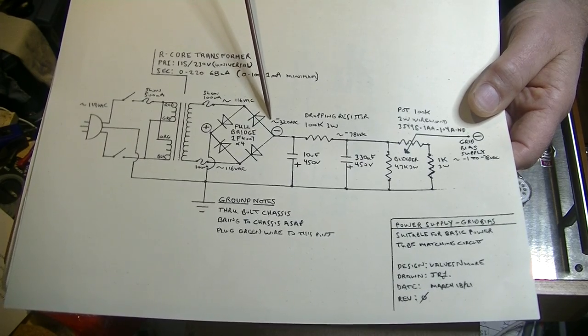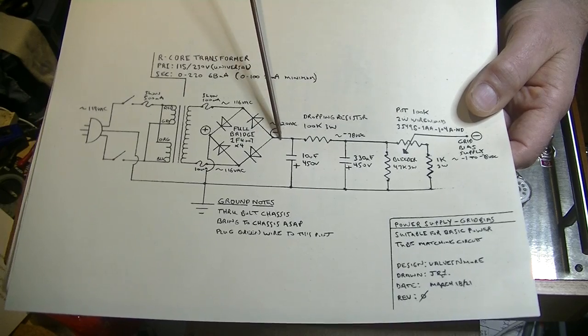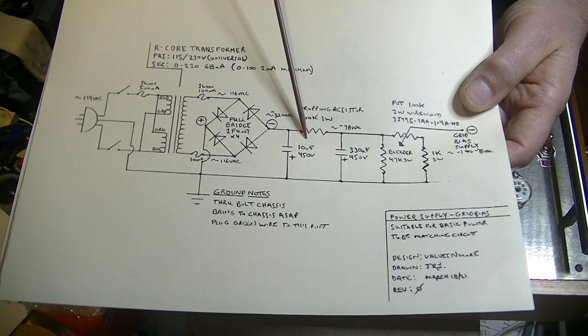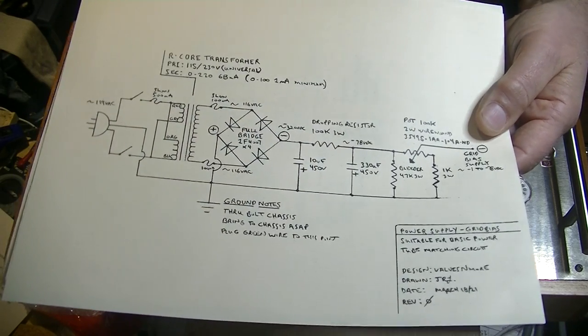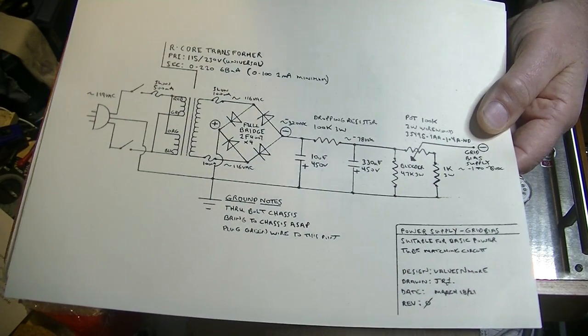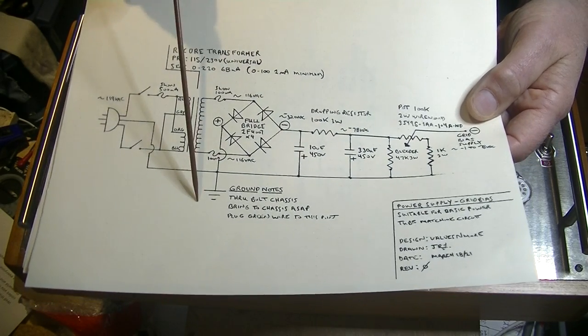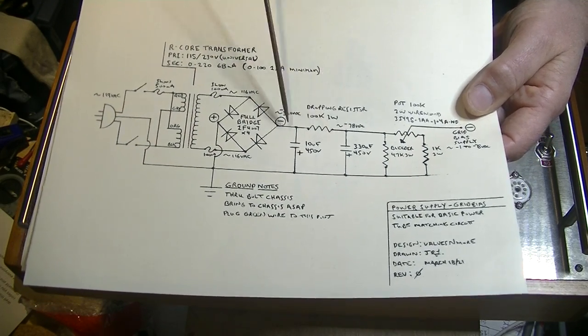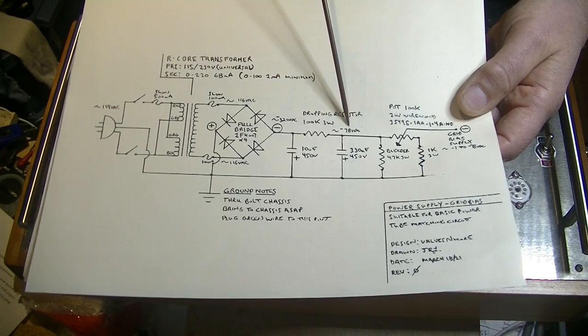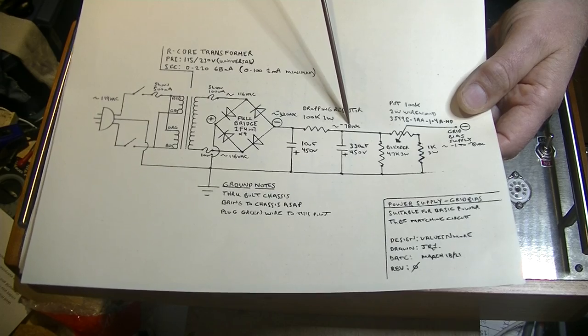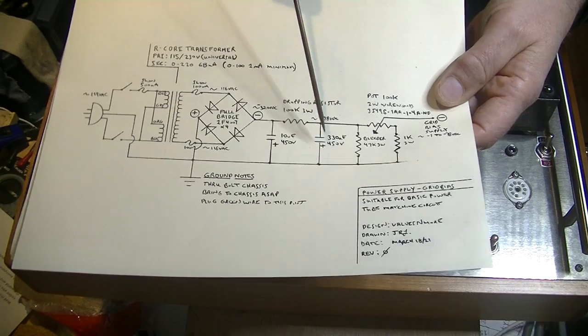So off we come, we're going to have approximately a raw minus 320 volts DC here. Our first filter cap is 10 microfarad 450 volts. And notice the orientation. Let's see if we can get a little bit more light on that. There we go. The positive goes to ground, the negative goes to the power rail.